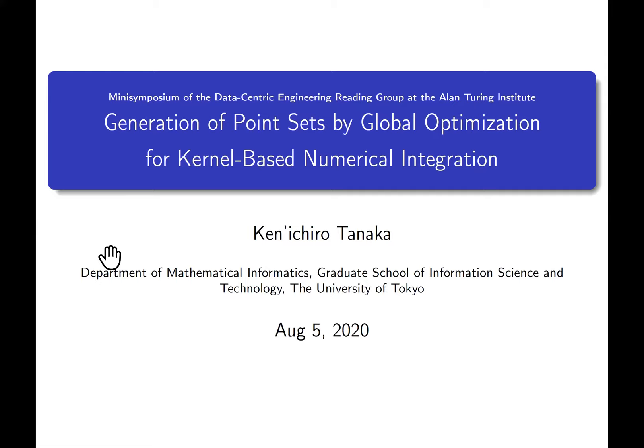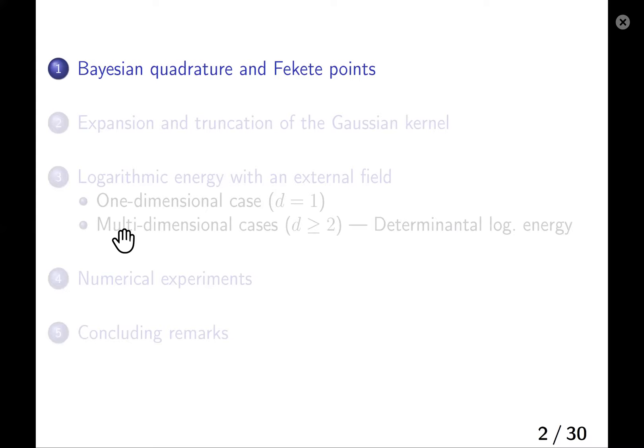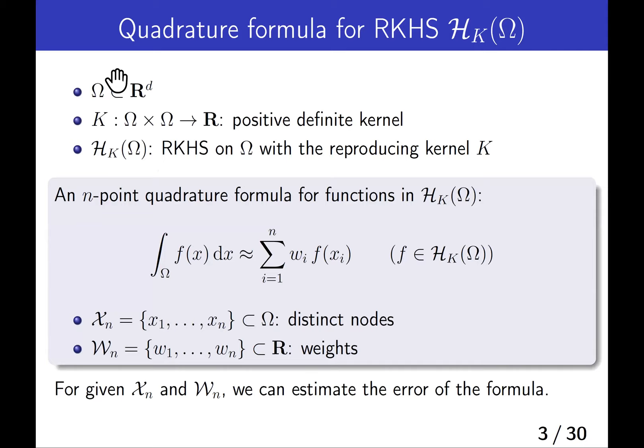Today I will talk about some methods for generating nodes for Bayesian quadrature. First, let me briefly review Bayesian quadrature and effective points, although most of you may be familiar with them. We consider a region in the d-dimensional Euclidean space, a positive gradient kernel, and a reproducing kernel Hilbert space on the region with the reproducing kernel k.